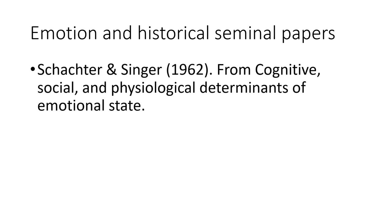So far in this lecture we have emphasized theories of emotion that do not include cognition as a primary cause of emotion. That started to change in the 1960s. One of the seminal papers by Schachter and Singer in 1962 presented evidence that cognition is indeed important in the formation of emotions. Physiology is important too, but it's cognition that helps form and name the emotion.